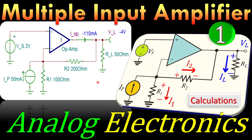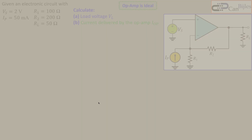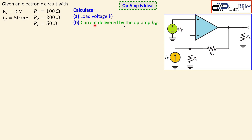We will work out everything step by step with calculations and also verify these in SPICE simulations. Our example circuit has Vs = 2 volts and Ip, a DC current source, at 50 milliamps. We have three resistors: R1, R2, and also the load. We would like to calculate the load voltage vL, the load current, and the current delivered by the op-amp iop. The op-amp is considered to be ideal.